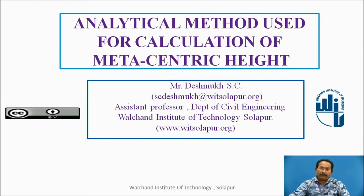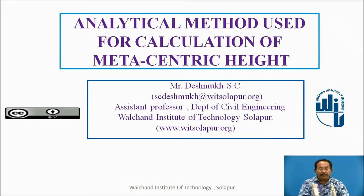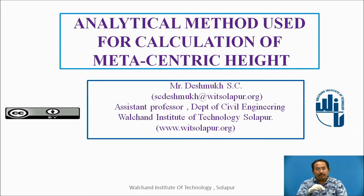The experimental method is used in the laboratory. If you have done the experiment, you know it very well. We take a ship model which is floating and add weights to it. Both methods depend on the tilting angle. By adding weight, you calculate the metacenter and metacentric height. Now we are going to see what happens in the analytical method.